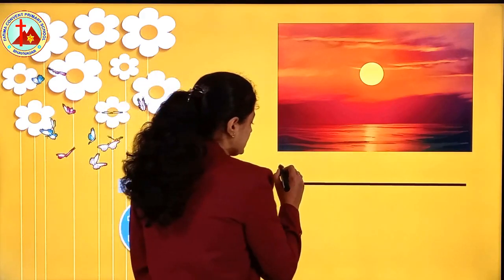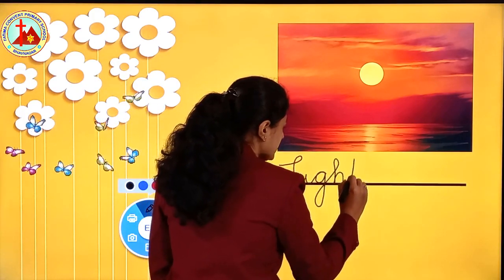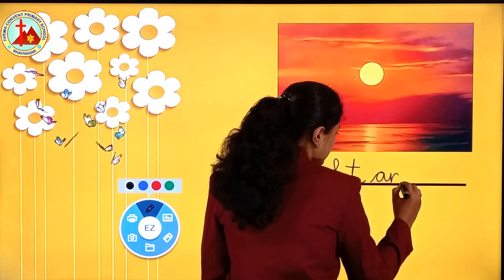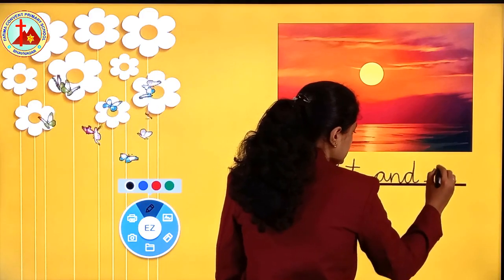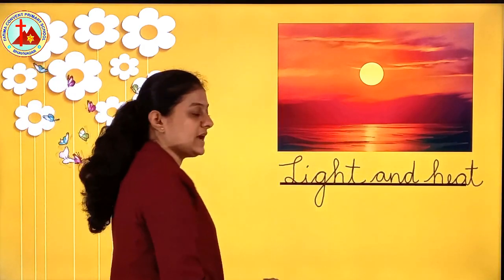Now what does sun give us? Sun gives us light and heat. In the daytime when there is sun, you get enough light — you don't need artificial tube lights. There is enough light and you feel warm. Sun gives us heat also. So we shall write light and heat. L-I-G-H-T. Light and heat. H-E-A-T. Heat. Light and heat.